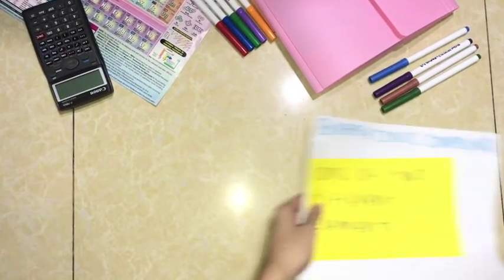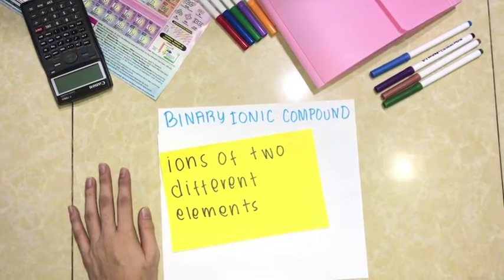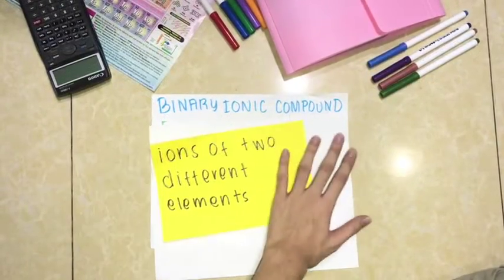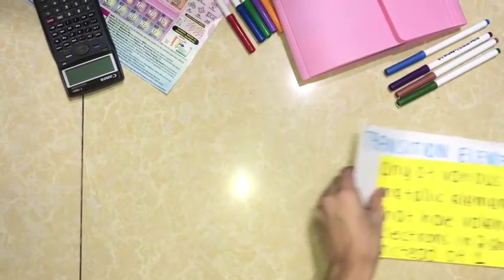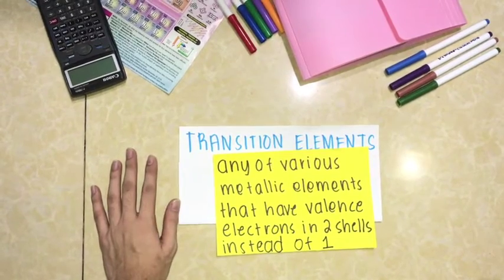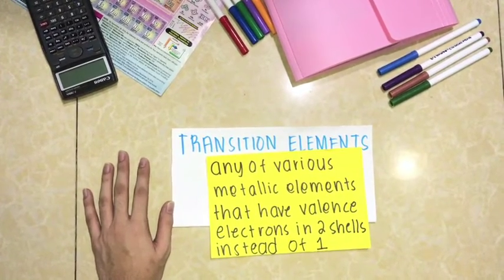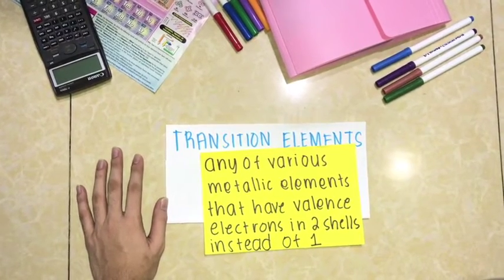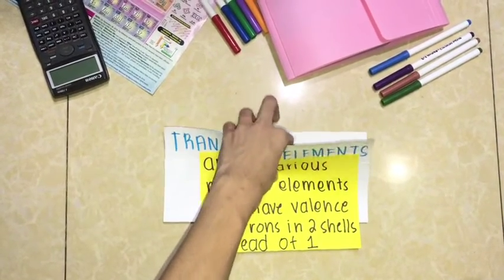Binary ionic compounds are ions of two different elements. Transition elements refer to various metallic elements that have valence electrons in two shells instead of one.